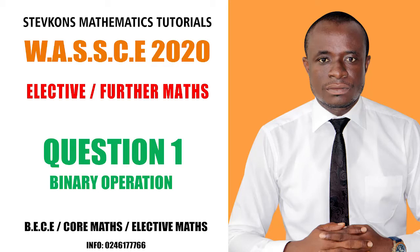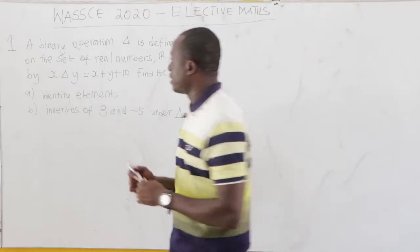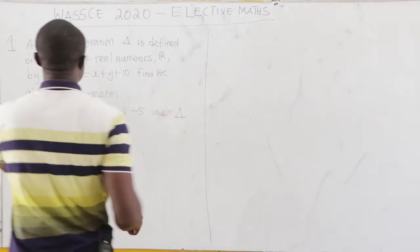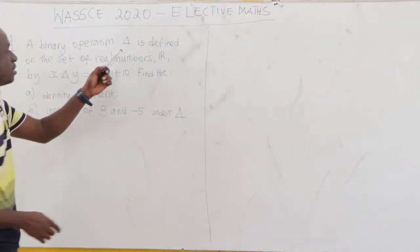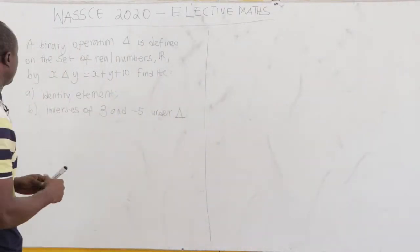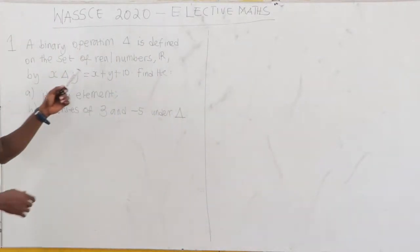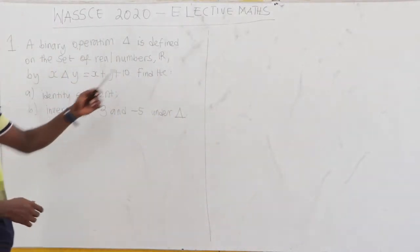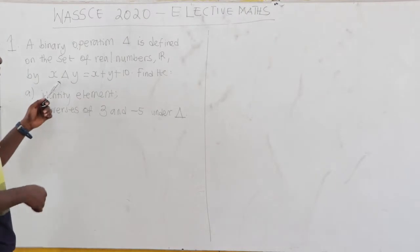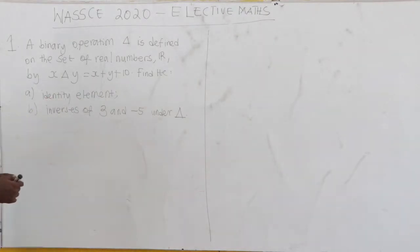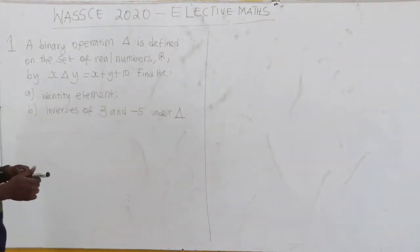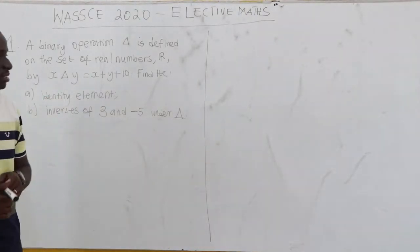Question number one, elective math. It says that a binary operation delta is defined on the set of real numbers R by x delta y to be equal to x plus y plus 10.